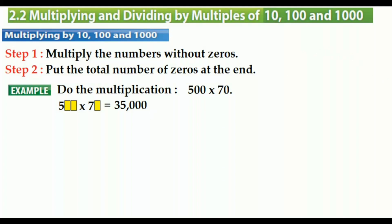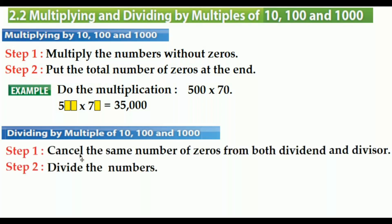Now let's see how to divide by multiples of 10, 100, and 1000. We also have a rule about that with two steps. The first step is cancel the same number of zeros from both dividend and divisor, and the second step is divide the numbers.